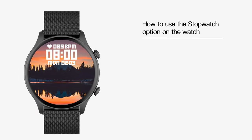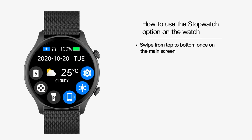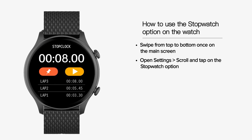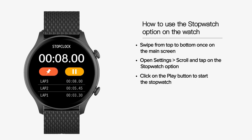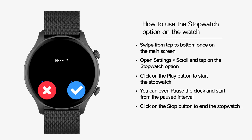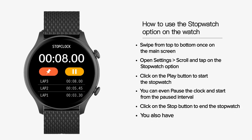How to use the stopwatch option on the watch. Swipe from top to bottom once on the main screen. Open settings, scroll, and tap on the stopwatch option. Click on the play button to start the stopwatch. You can even pause the clock and start from the paused interval. Click on the stop button to end the stopwatch. You also have an option to pin the lap.